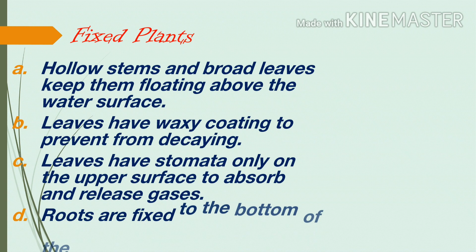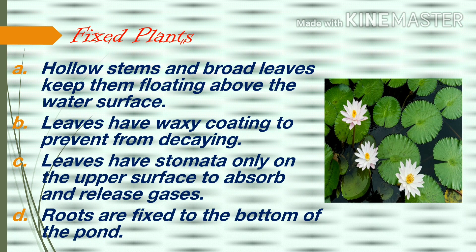Fixed plants. Plants that have their roots fixed to the bottom of a pond are called fixed plants. They are found in shallow water. Lotus and water lily are examples. Their adaptations include: hollow stems and broad leaves keep them floating above the water surface; leaves have a waxy coating to prevent decaying; leaves have stomata only on the upper surface to absorb and release gases; and roots are fixed to the bottom of the pond. Did you know? The stem of lotus is eaten as a vegetable and is also known as kamal kakadi.